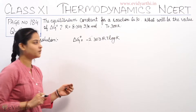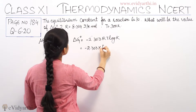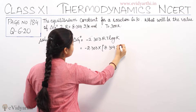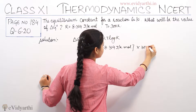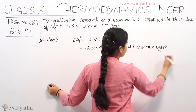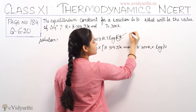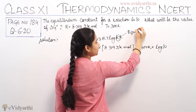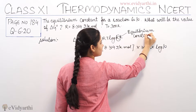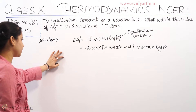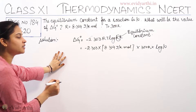Simple calculations by substituting these values. Minus 2.303 into 8.314 joules per Kelvin per mole, temperature given to us is 300 Kelvin, and it is log 10.